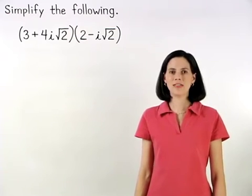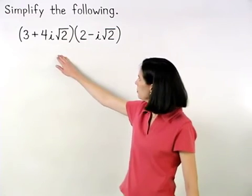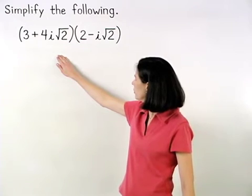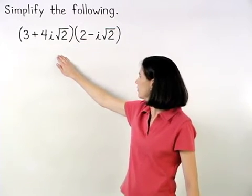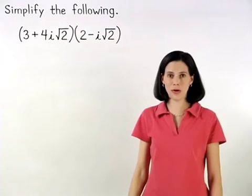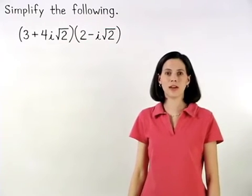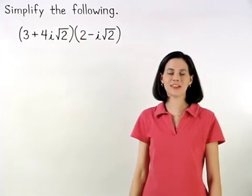Here, we're asked to multiply 3 plus 4i root 2 times 2 minus i root 2, so we use the FOIL method. First, outer, inner, last.